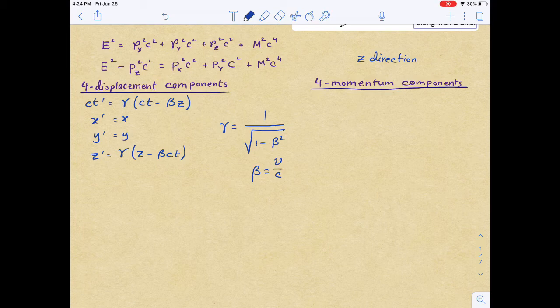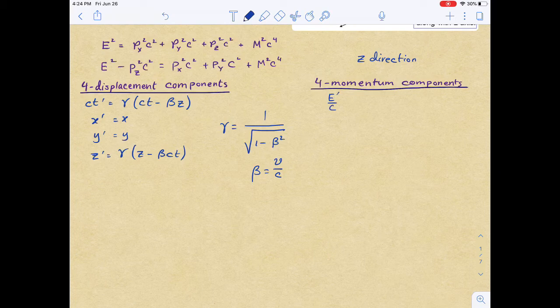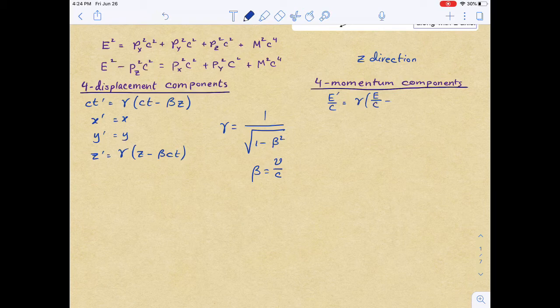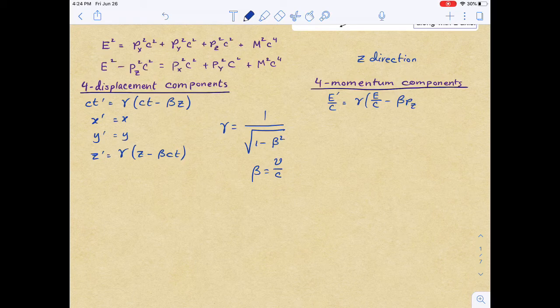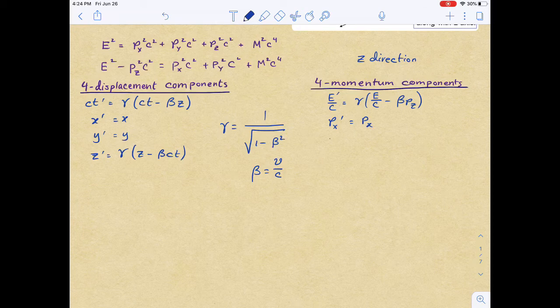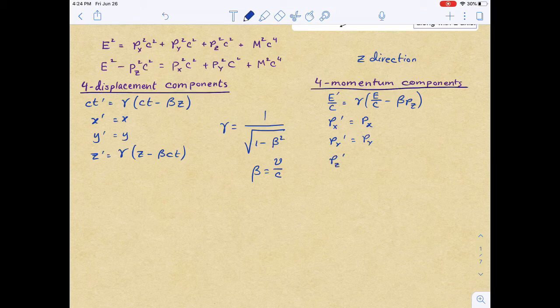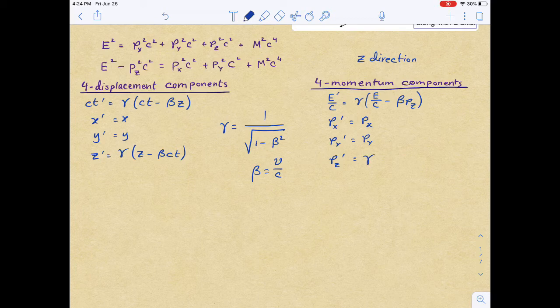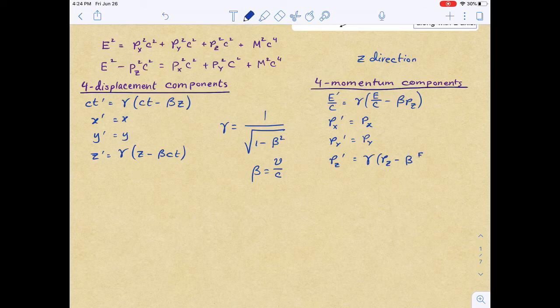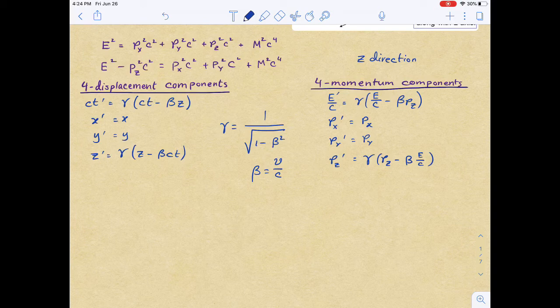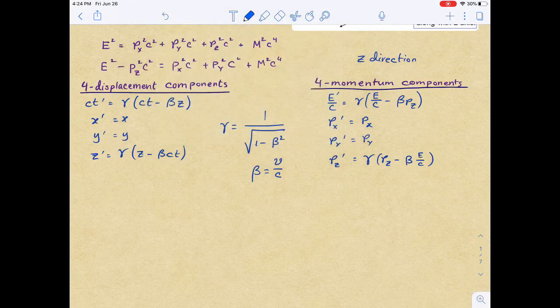Similarly, we will be writing out the 4-momentum components. E prime divided by c equals gamma times E divided by c minus beta pz. Then px prime will just be the same as px because those are invariants. Py prime is just py, and pz prime is gamma times pz minus beta E divided by c.